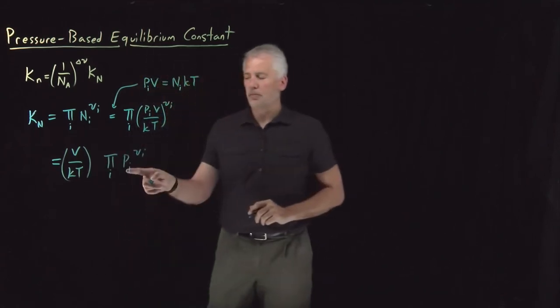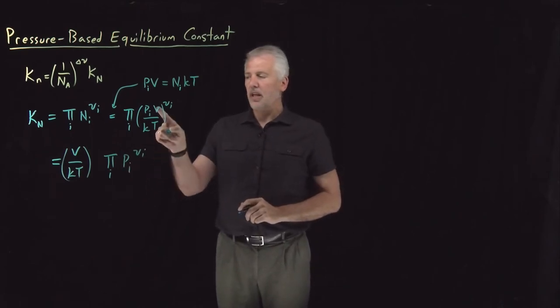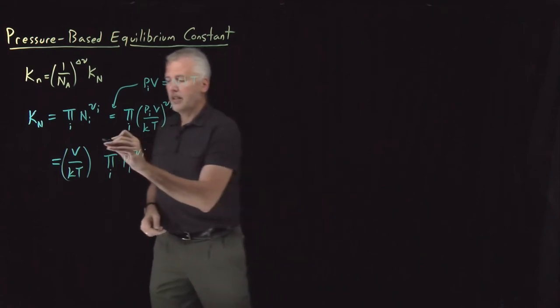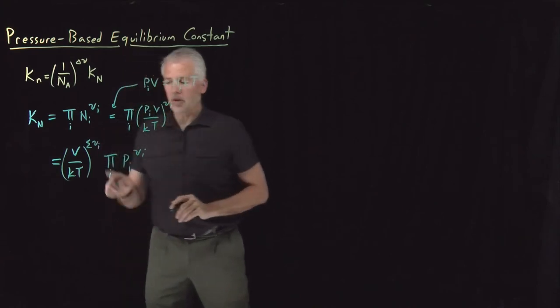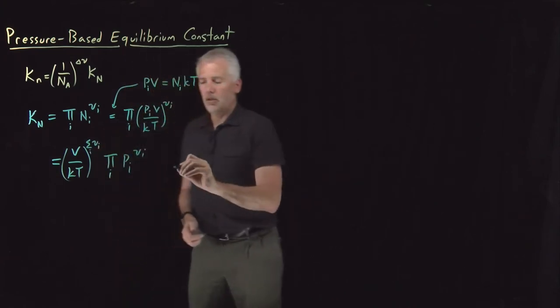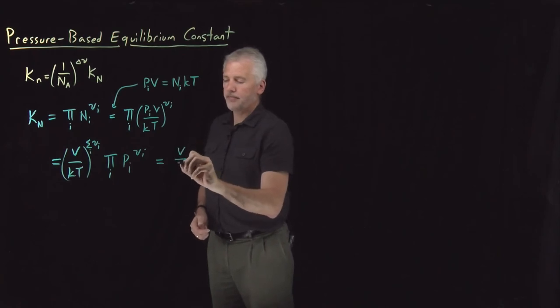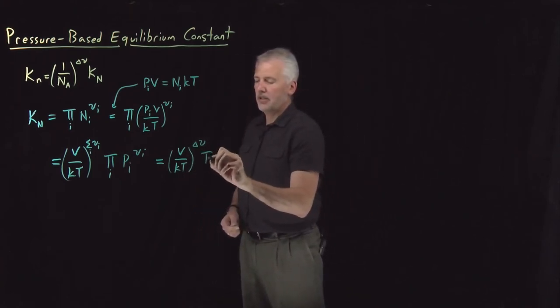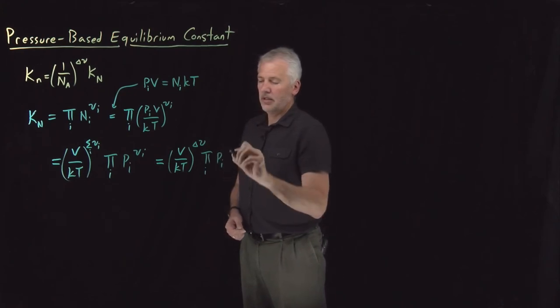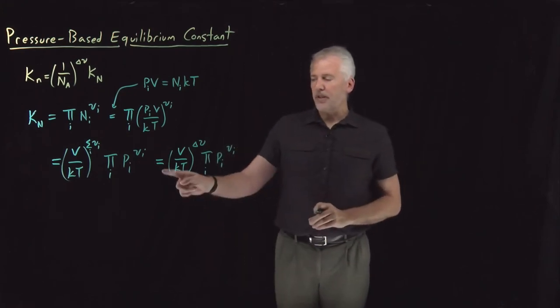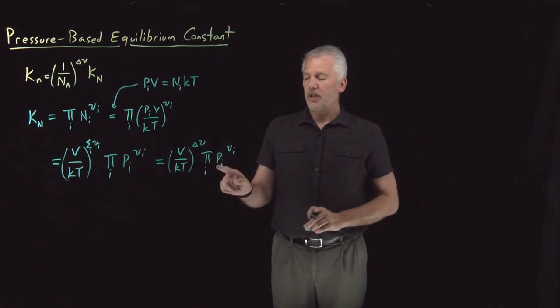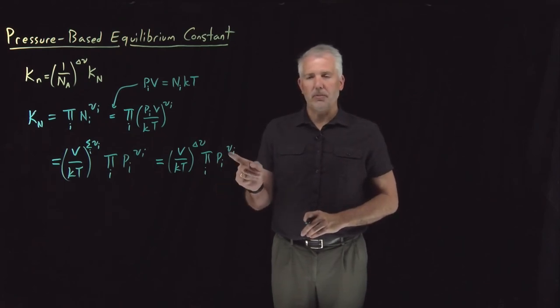All that's left inside is pressures raised to some stoichiometric coefficient. I pulled V over kT out some number of times—nu sub i times for each species, altogether nu sub i for all the species added up. Or the way we prefer to write that, the sum of all those stoichiometric coefficients is just the total change of the stoichiometric coefficient during the process. So I've got some number of factors of V over kT raised to this change in stoichiometry, multiplying this quantity which is a product of partial pressures raised to stoichiometric coefficients.